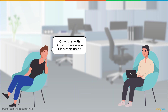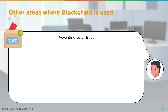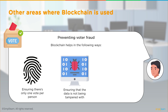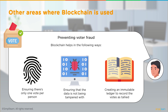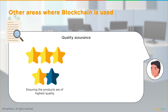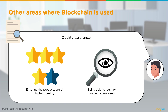Other than Bitcoin, blockchain is also used for preventing voter fraud. Blockchain ensures there is only one vote per person, ensures data is not tampered with, and creates an immutable ledger to record votes as tallied — once a vote is recorded, it cannot be modified. It is also used in quality assurance, ensuring products are of the highest quality and making it easy to identify problem areas.